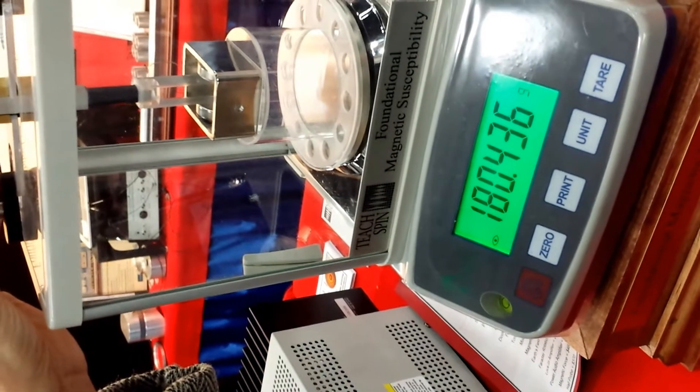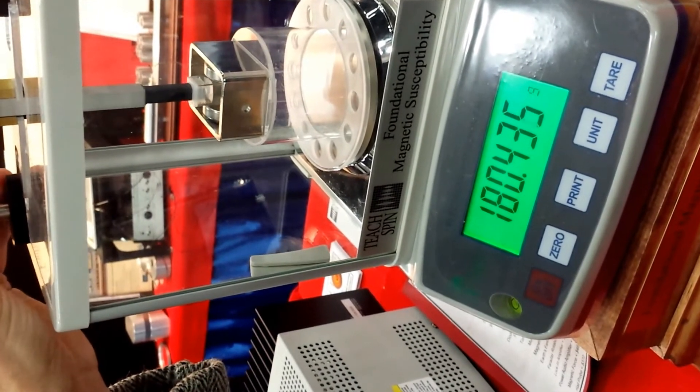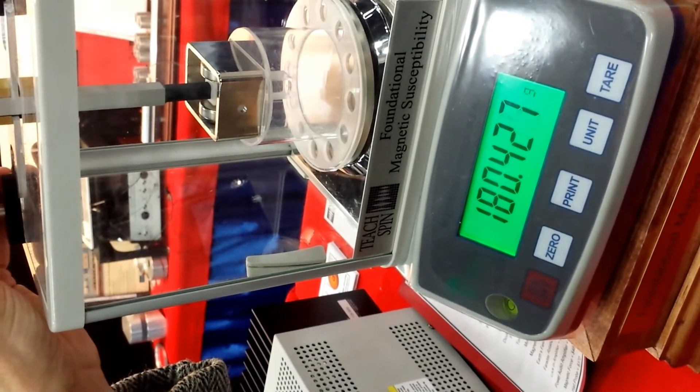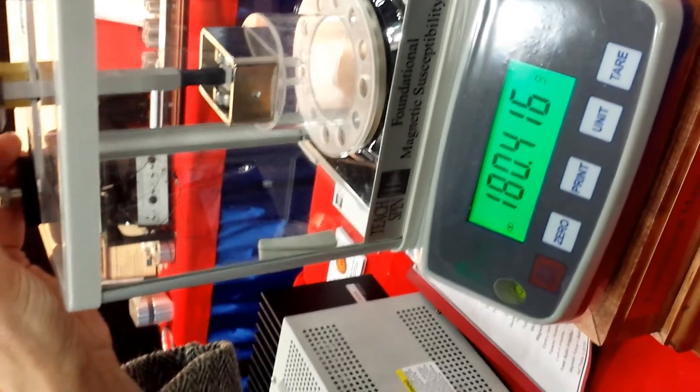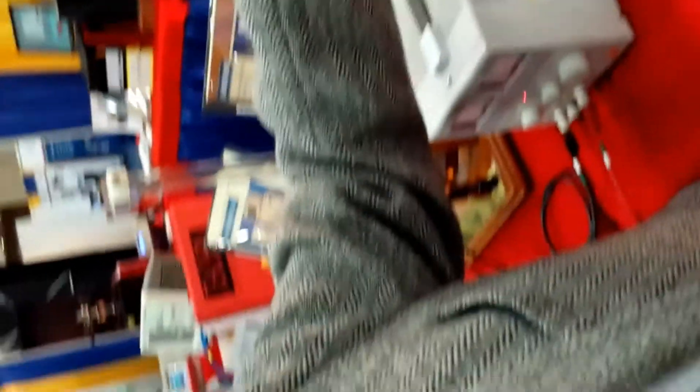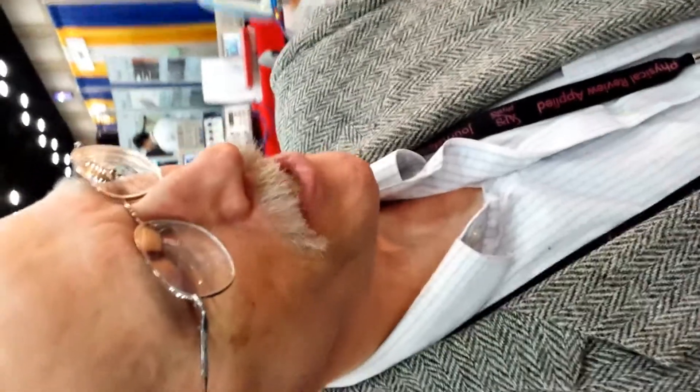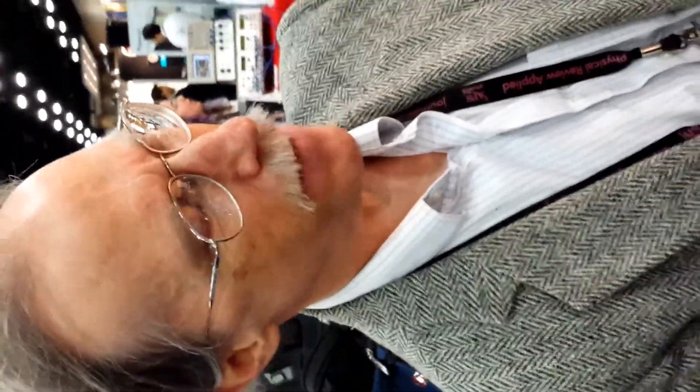Yes. Okay. That's great. And the same reasoning. When I have the bulk of the water below the magnet, the water, being diamagnetic, is repelled by the magnet. By Newton's third law, the water must be pushing up on the magnet, making it seem lighter.